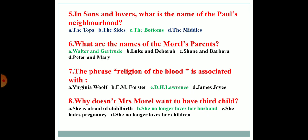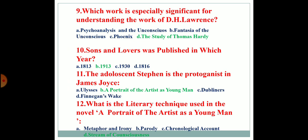In Sons and Lovers, what is the name of Paul's neighborhood? The name is The Bottoms. What are the names of the Morrell's parents? The parents were Walter and Gertrude. The phrase 'religion of the blood' is associated with D.H. Lawrence. Why doesn't Mrs. Morrell want a third child? She no longer loves her husband. Which work is equally significant for understanding D.H. Lawrence? The Study of Thomas Hardy. Sons and Lovers was published in which year? It was published in 1913.